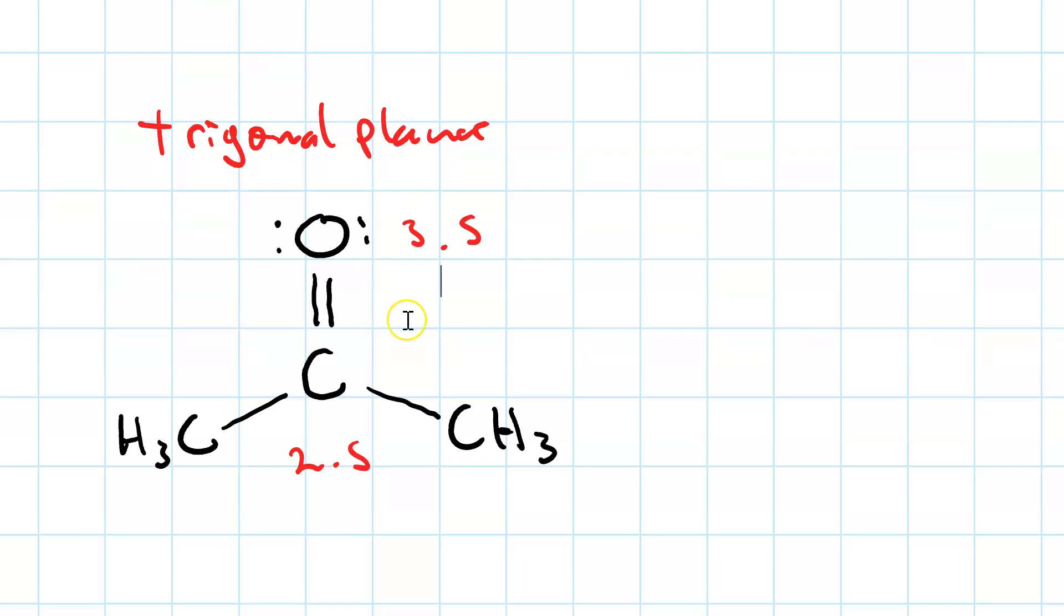The pair of bonding electrons is localized in space much closer to the oxygen atom than the carbon atom, giving the oxygen a partial negative charge, which we denote with a delta minus, and the carbon a partial positive charge, denoted by a delta plus. And we denote the bond dipole, like this, pointing toward the more electronegative atom.